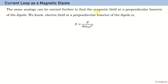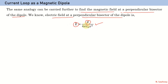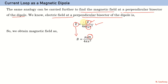This same analogy can be carried further to find the magnetic field at the perpendicular bisector of the dipole. We have already derived in our electrostatics chapter that the electric field at the perpendicular bisector of the dipole is given by a known expression. Replacing those terms by their magnetic analogues, electric field becomes magnetic field, electric dipole moment becomes magnetic dipole moment, and 1/ε₀ becomes μ₀, while 4πx³ is copied as is.